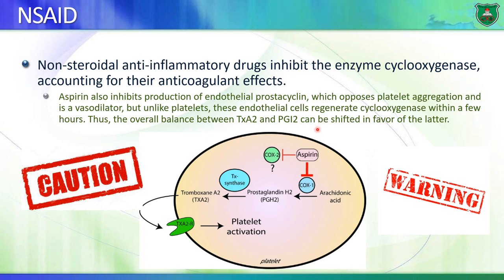Throughout this lecture you notice there is a balance between molecules that have opposing actions. For example, thromboxane is a vasoconstrictor, but aspirin also inhibits the production of prostacyclins. Prostacyclins prevent platelet aggregation and are vasodilators. So we have a vasoconstrictor in thromboxanes and a vasodilator in prostacyclins - which molecule wins the competition? It's actually prostacyclins eventually.